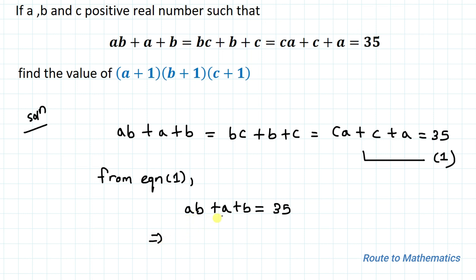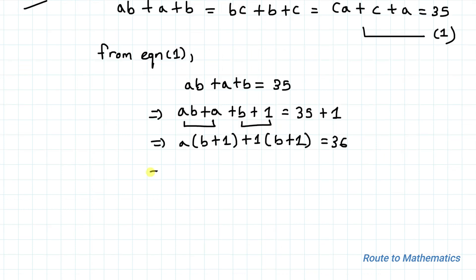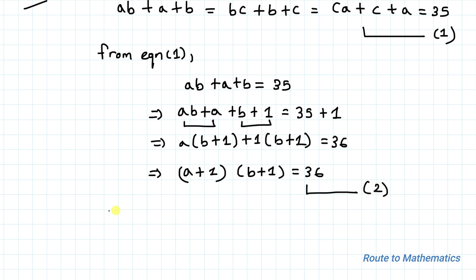In the next step, let's add 1 to both sides of the equation. So we have AB plus A plus B plus 1 equals 36. Taking A common from the first two terms and 1 common from the remaining terms, we get (A+1)(B+1) equals 36. Let's take it as equation 2.